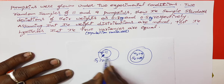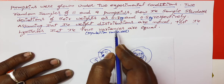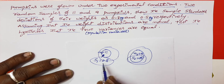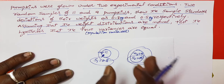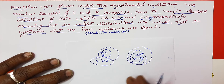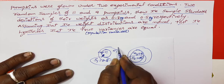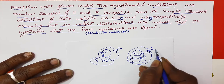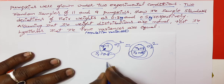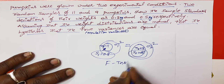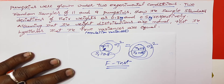If the variances are equal, the pumpkins grow under both conditions with the same variance. We need to test whether there is a difference between the variance of weights. The population variances are sigma1 squared and sigma2 squared. We are going to test this using the F-test.